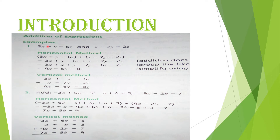Agar vertical method karna chahte hain to bhi bahut aasaan hai. Vertical method mein pehli expression 3x plus y minus 6z likhen, doosri expression uske neeche x minus 7y minus 2z likhen. Yahan se x ka coefficient upar 3 hai aur neeche 1 — milake 4x.